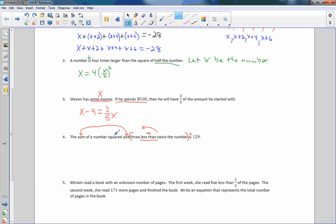The sum of a number squared. A number squared. And, sum plus. Three less than twice the number. Read it in reverse because of the word less than. Twice the number, twice the number, less than three. Is. Now, I'm over here. Is. One hundred twenty-nine.